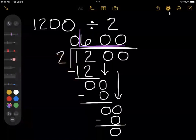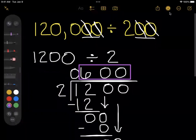That means back to our original problem, that 120,000 divided by 200 is the same as 600.